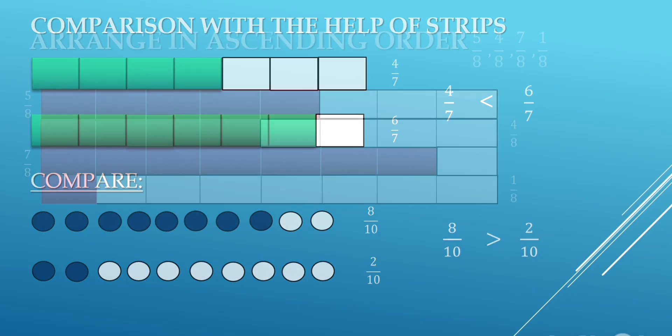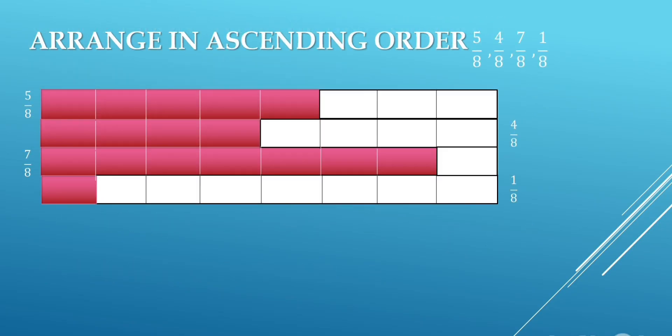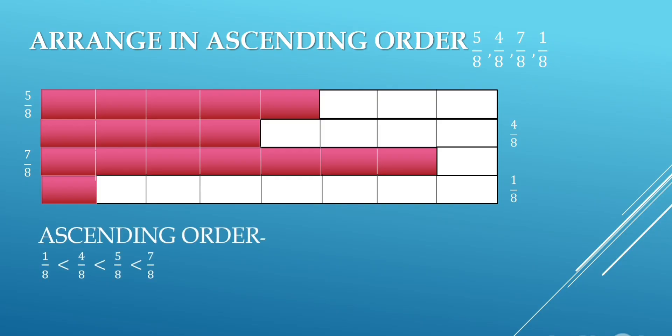Now arrange in ascending order. The numbers are 5 upon 8, 4 upon 8, 7 upon 8, and 1 upon 8. In ascending order, we arrange fractions in increasing order. We will take the smallest number first, that is 1 upon 8. So ascending order is: 1 upon 8 < 4 upon 8 < 5 upon 8 < 7 upon 8.